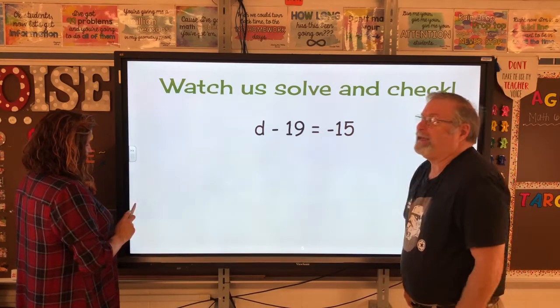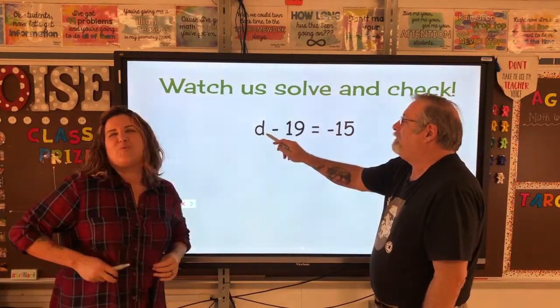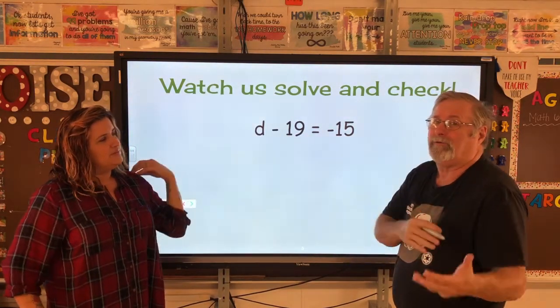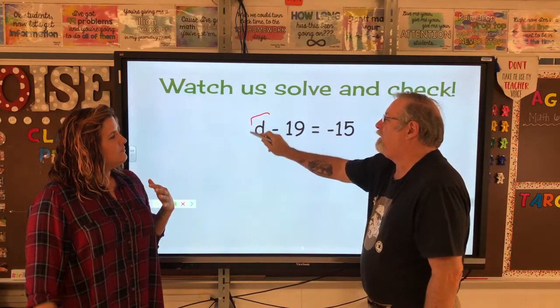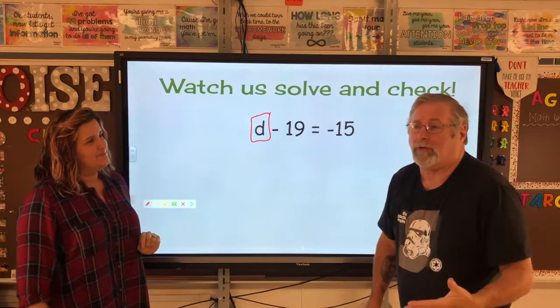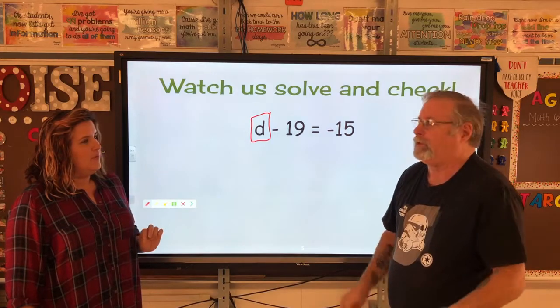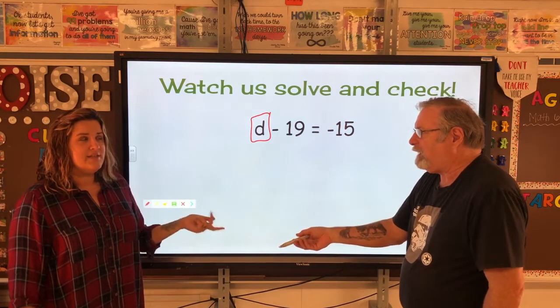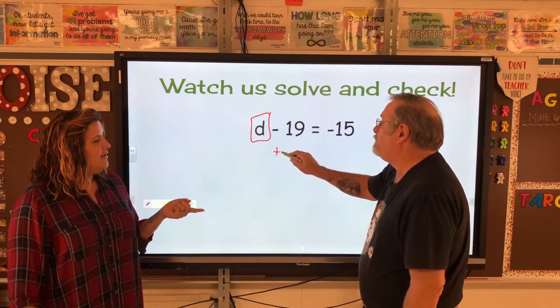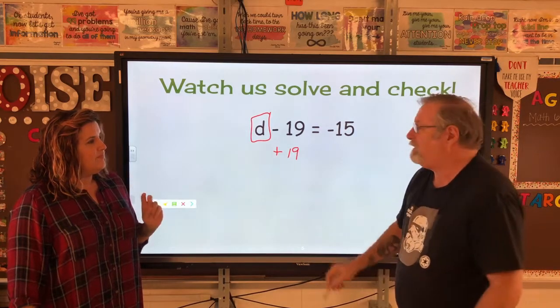But do remember, you can always use a calculator for these, especially negative numbers because it can get a little tricky. My turn. Now, I'm not going to go into this smoochy smoochy thing. But we have D minus 19. So we're taking 19 away from D, but I need D all by itself. That's the only way you can solve an equation is to isolate the variable. This is minus 19. We always have to do the opposite. The inverse of minus is? Inverse is a fancy word. So the inverse would be to add.